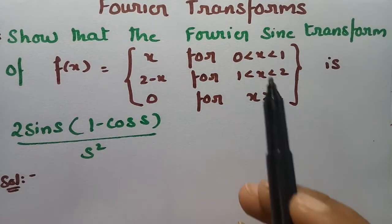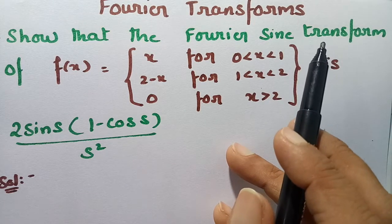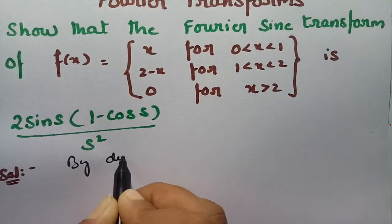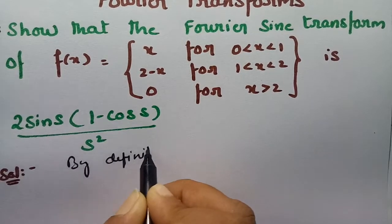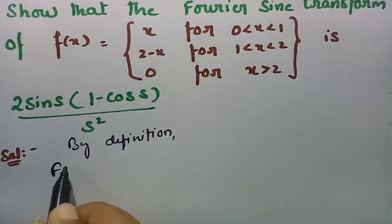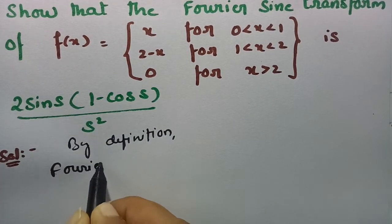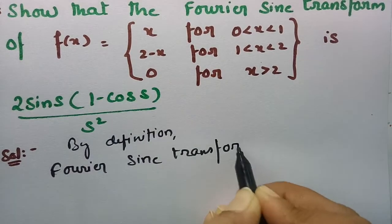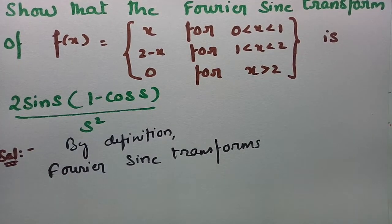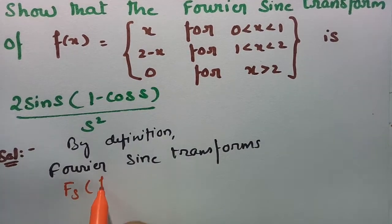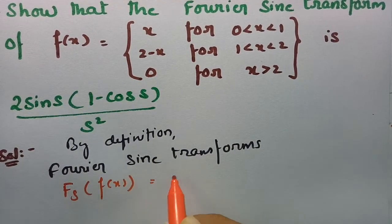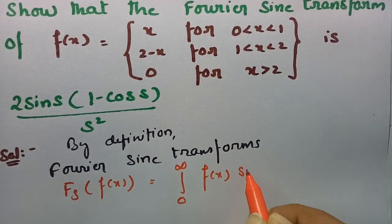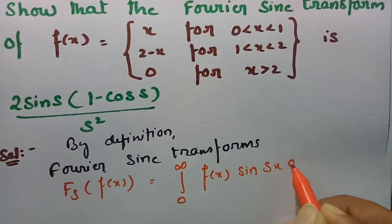Let's get started to find the Fourier sine transform. By definition, the Fourier sine transform of f(x) is equal to the integral from 0 to infinity of f(x) times sin(sx) dx.